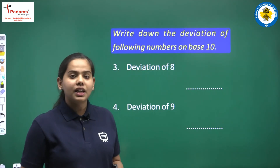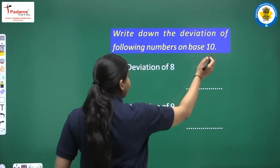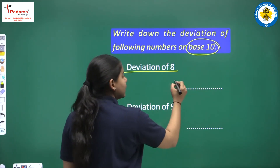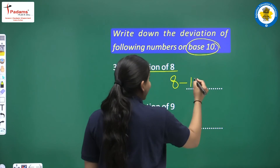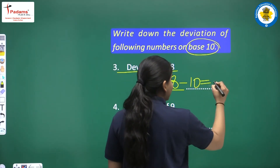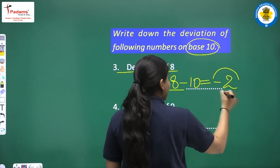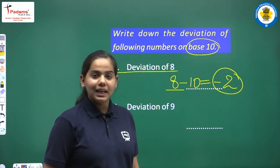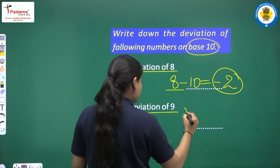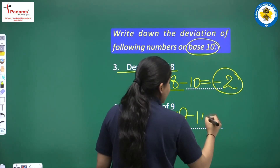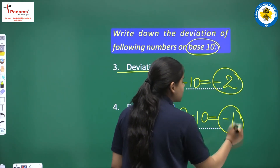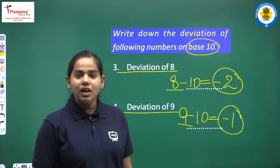Now let us practice some negative deviation. Base is 10. Deviation of 8: the number is small, so 8 minus 10 gives us negative 2 or minus 2 — negative deviation. Deviation of 9: 9 minus 10 gives us minus 1 because 9 is a smaller digit — again a negative deviation.